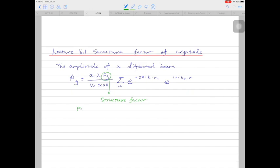If fg is equal to zero, what happens is phi g will be equal to zero. So if the structure factor is zero on that set of planes, then the amplitude of the diffracted beam will be zero.